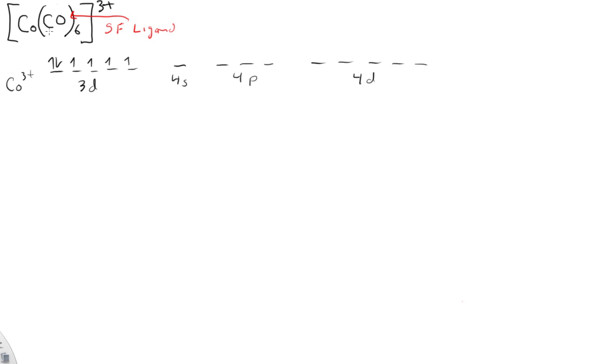Since we have a strong field ligand, we're going to be able to add some energy, pairing energy. And what's going to happen is these two electrons are going to be caused to pair up with these two electrons. So we go from our ground state to an excited state.